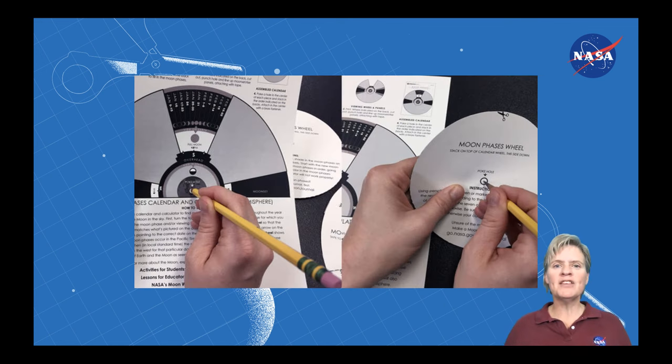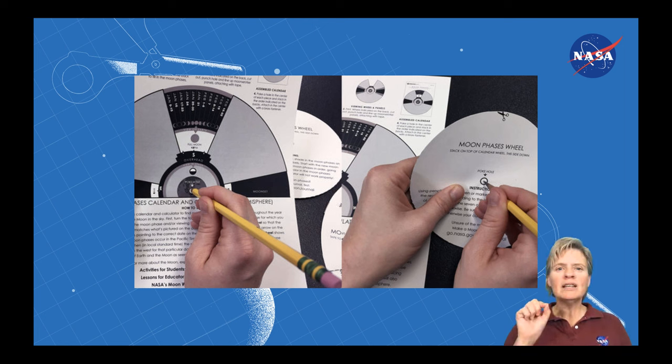Next, use that sharpened pencil again to poke a little tiny hole in the center of all three wheels. This is going to be the guide hole either for your brass fastener or for your needle and thread.